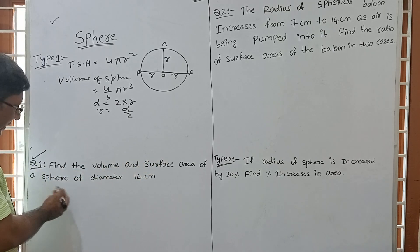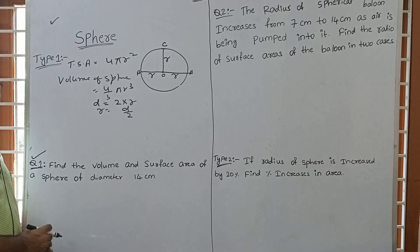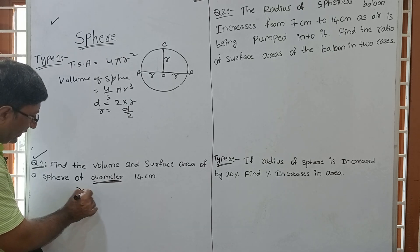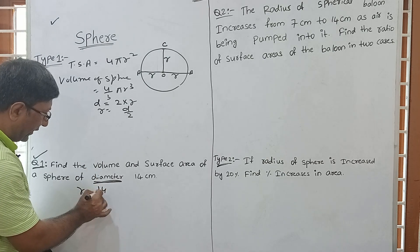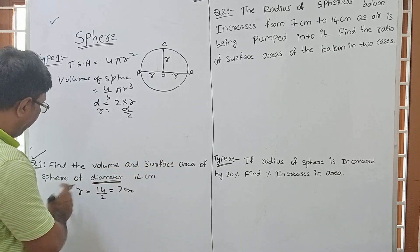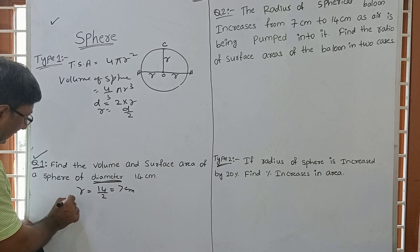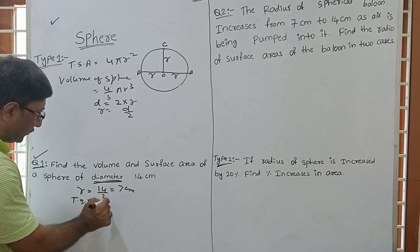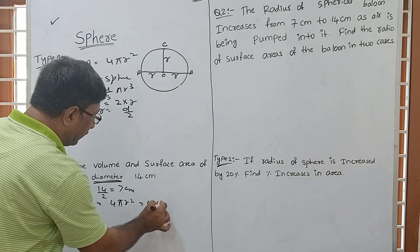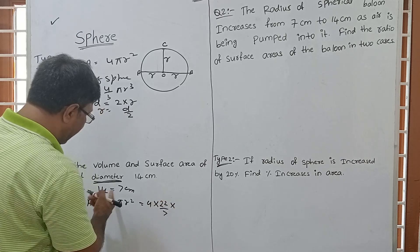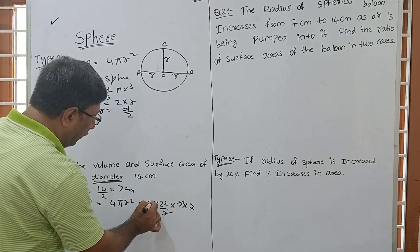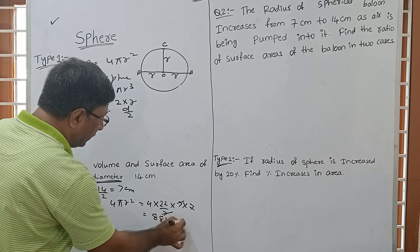The first question: Find the volume and surface area of a Sphere of diameter 14 cm. Diameter is given, so first find radius. Radius equals 14 divided by 2, which is 7 cm. Now we have to find volume and surface area of the Sphere.